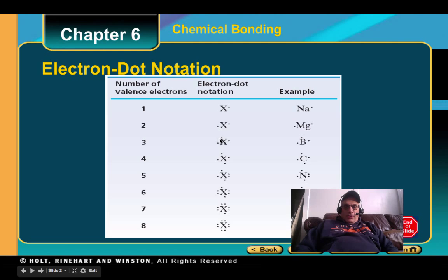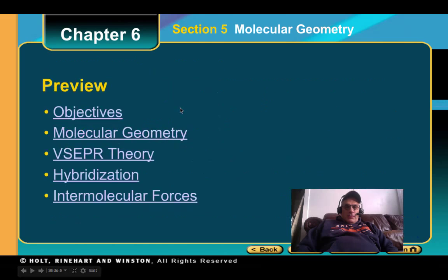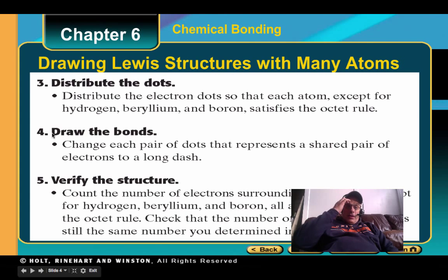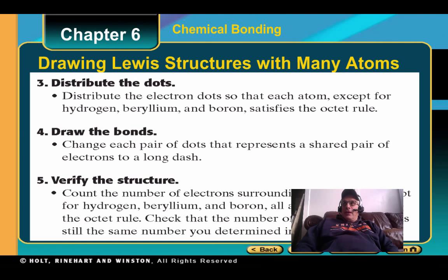One, two, three, four, and then start over: five, six, seven, eight, on down. Here is how to draw them — how to gather information, arrange them, and then distribute your dots, draw the bonds, and then verify the structure. Remember the octet rule: you need to have eight. Each element needs to have eight, except hydrogen can have two.